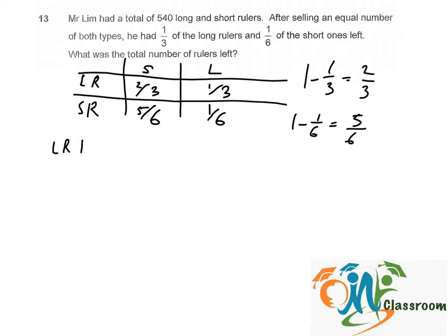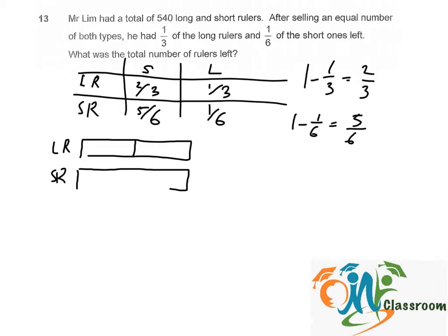For the long ruler, he sold two out of three. For the short ruler, he sold five out of six, which is the same number. So these two models, they are the same size.